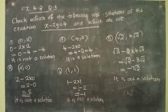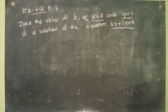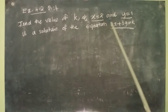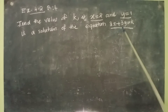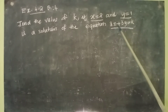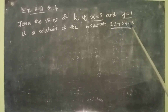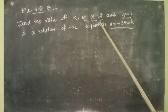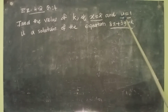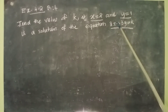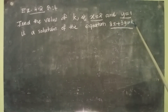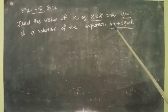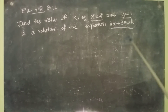Question number 4: find the value of k if x equal to 2 and y equal to 1 is a solution of the equation 2x plus 3y equal to k. The equation given is 2x plus 3y equal to k, and the solution is also given — solution means values of x and y. x equal to 2 and y equal to 1 are given, and we have to find out the value of k.